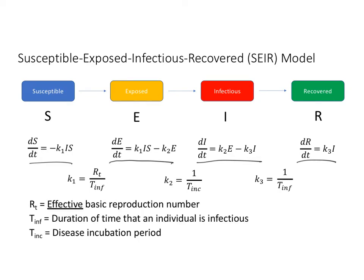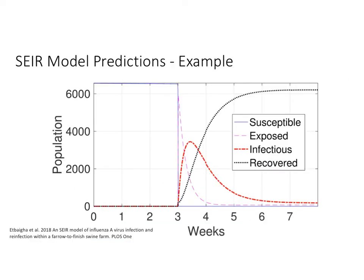The rate constants that define the relationships between S, E, I, and R in these models take into account three different parameters: the first is the effective basic reproduction number Rt; the second is the duration of time that an individual is infectious, T_inf; and the third is the period for disease incubation, T_inc.